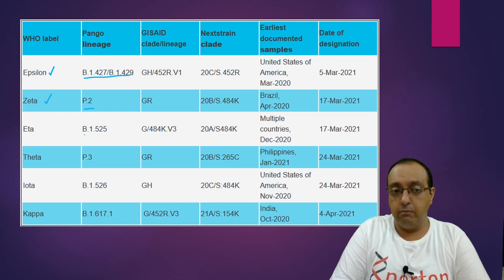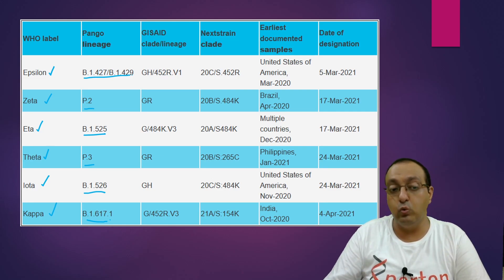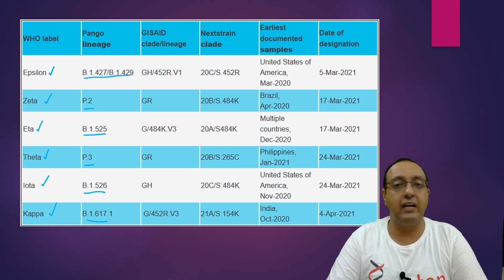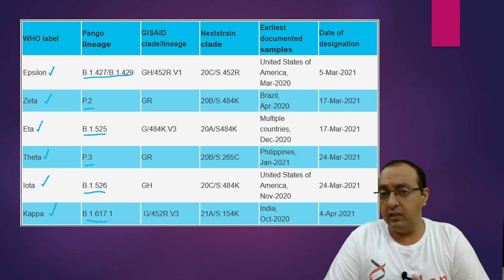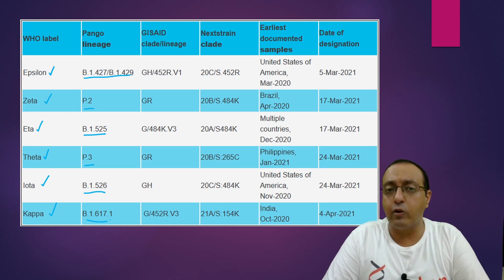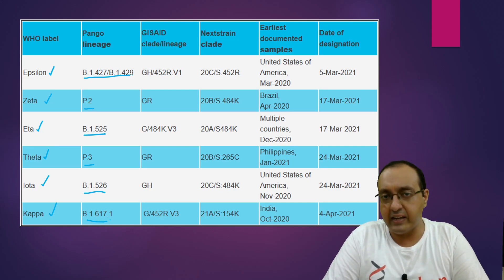The six variants of interest are: B.1.427/429 labeled as Epsilon; P.2 variant is Zeta; B.1.525 is Eta; P.3, first detected in the Philippines, is Theta; B.1.526 is Iota; and B.1.617.1 is Kappa. Note that B.1.617.2 is Delta, so Delta and Kappa are the new names for what was called the India variant. It is not acceptable to use 'Indian variant,' 'UK variant,' or 'Brazil variant' in common language — journalists should be especially careful to use these WHO-recommended labels.